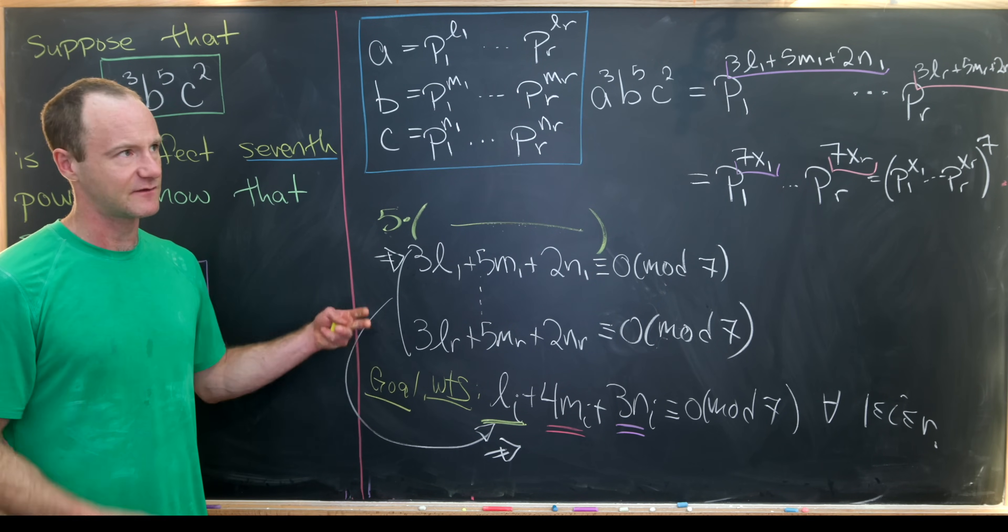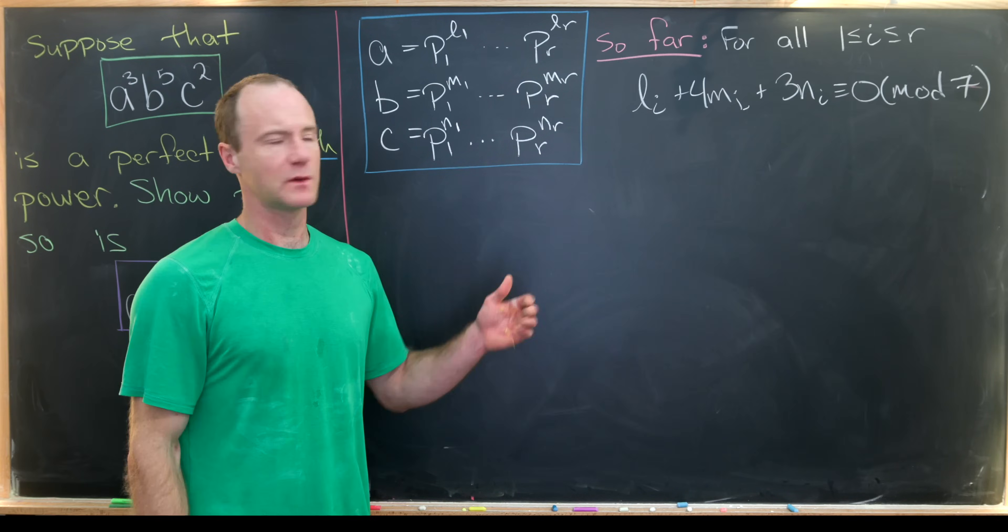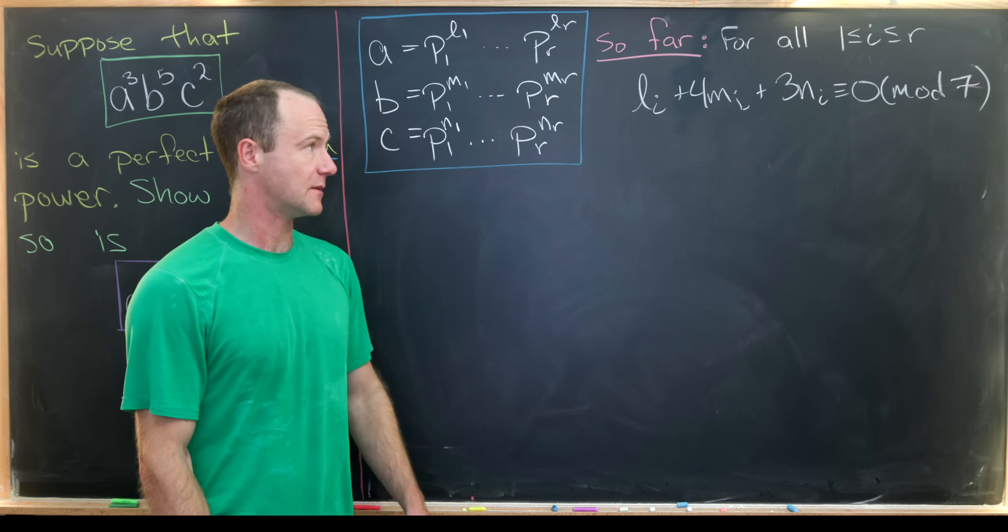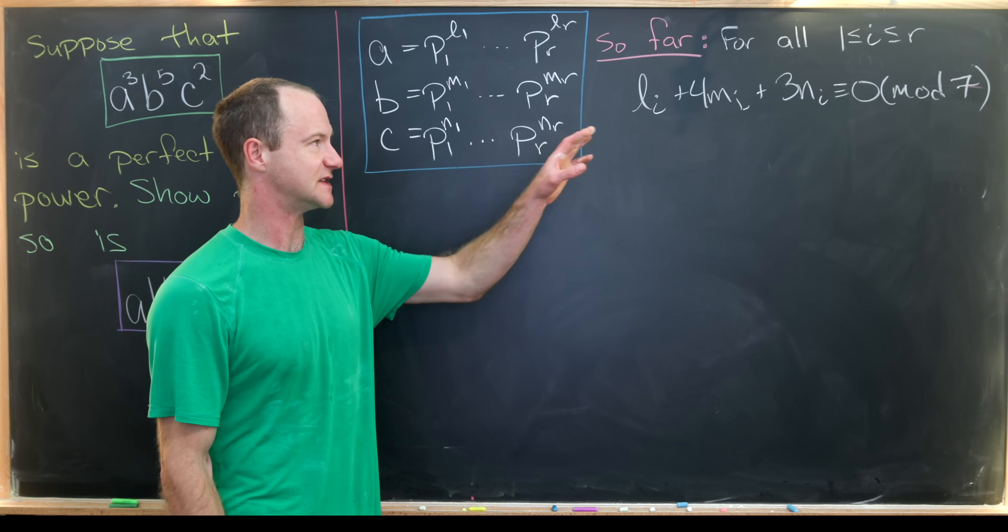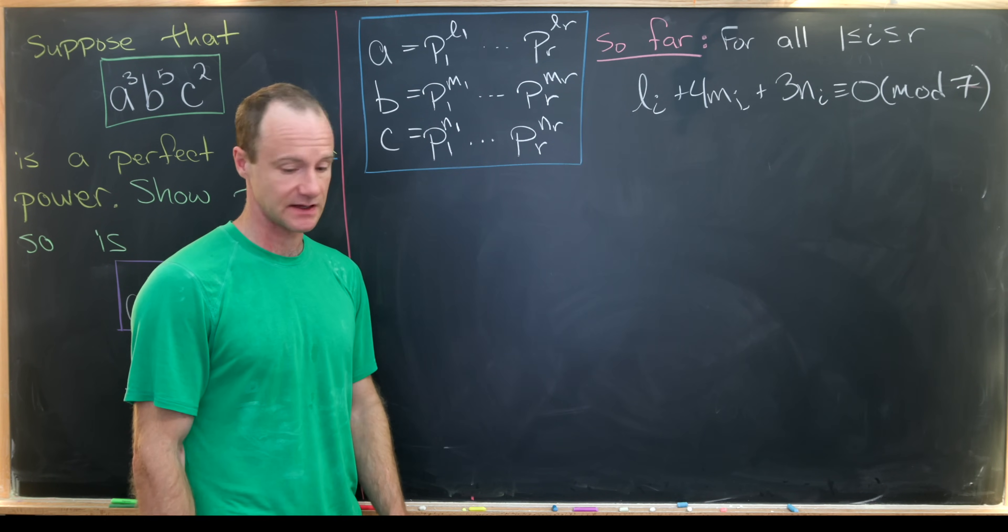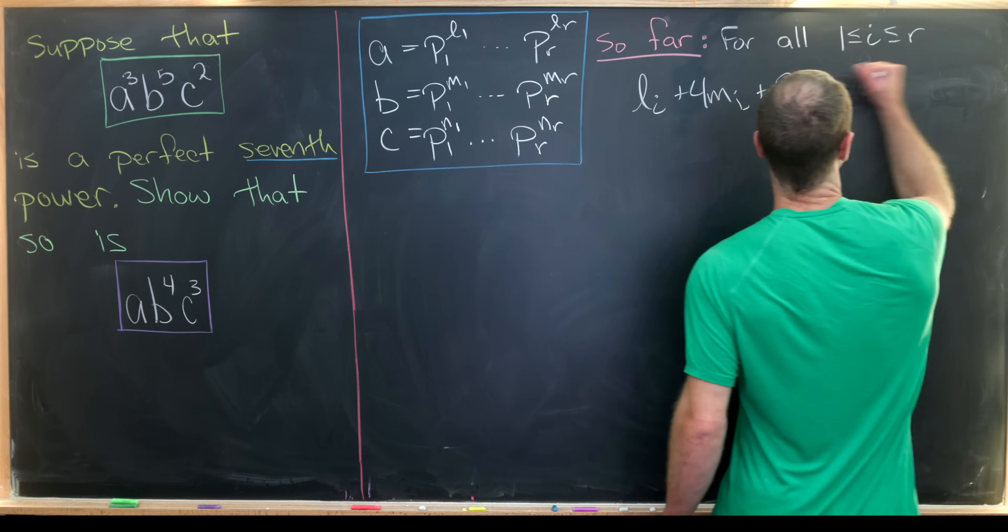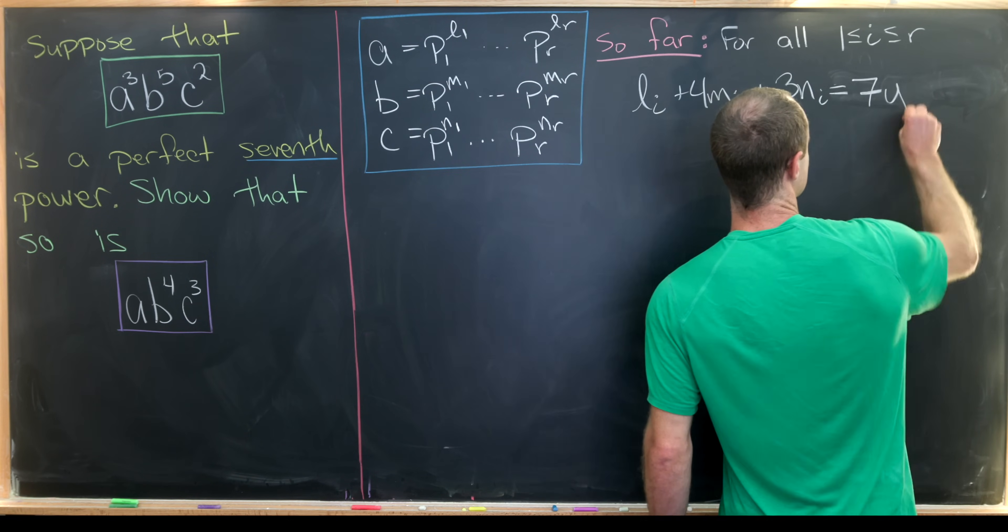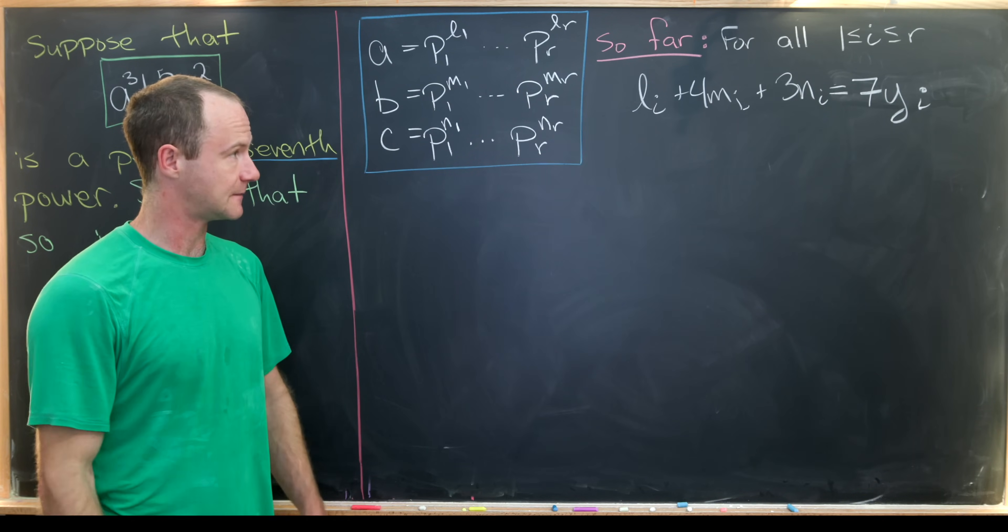So that means that if we know this is true, then by multiplying all of these congruences by 5, that implies that this is true. Okay, and then I kind of like waved our hands at finishing it all off, but let's do that on the next board. So far, we've just determined that for all i between 1 and r, that li plus 4mi plus 3ni is congruent to 0 mod 7, where the l's, m's, and n's are the exponents here in the prime factorizations of a, b, and c. Now, we're going to take this congruence to 0 mod 7, and recall that that means that each of these is a multiple of 7. So I'll say that this is 7 times yi, well, for some number yi. Okay,